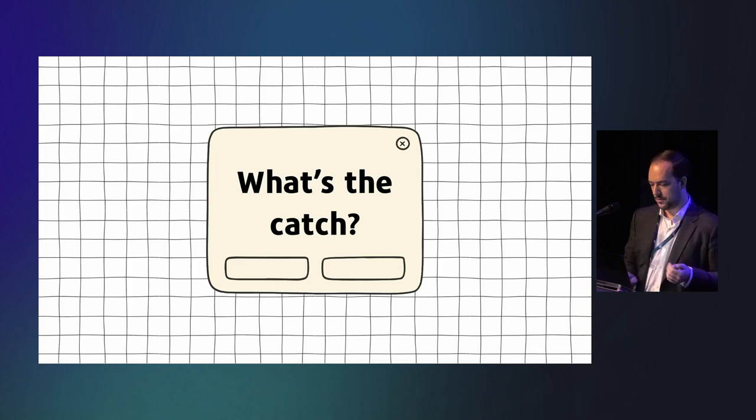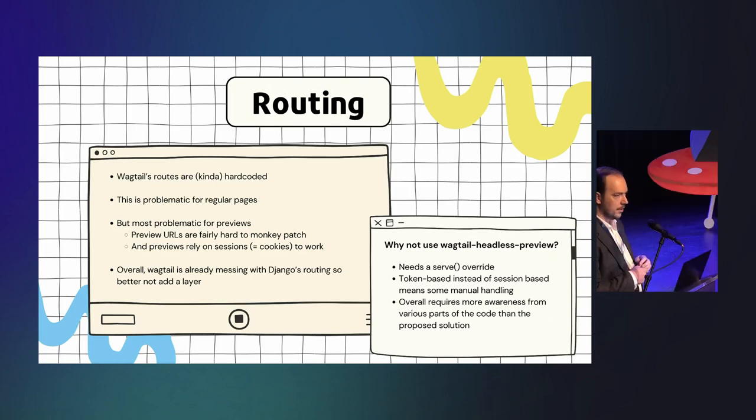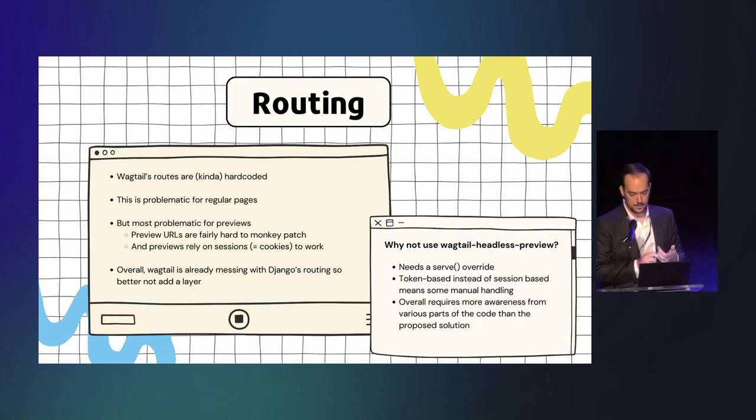So if you have a home page, you're going to statically load just the content of this home page, and then when you have a mapping component that is taking one megabyte of JavaScript, then it will only be loaded when you go on the map page, and not in the whole JavaScript bundle. And doing this with just Wagtail is a bit cumbersome, you can bring your own solution to this, usually. So, what's the catch? Well, the catch is, first thing is routing, because Wagtail's routing is kind of hard-coded. This is problematic for regular pages, but most importantly, it's very problematic for previews, because the rules for previews are a bit weird, and they are also session-based, so that is not intuitive, how to make it work.